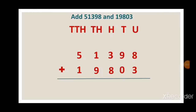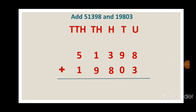51,398 and 19,803. Here you can see the numbers are arranged in a vertical order as per their place value. We always start with the unit place. Here you can see 8 units plus 3 units makes 11 units, so we will write 1 in the unit place and carry 1 over.